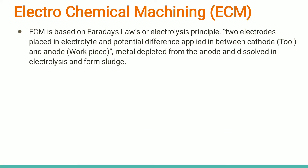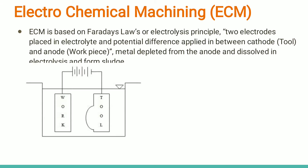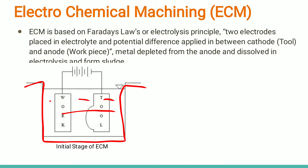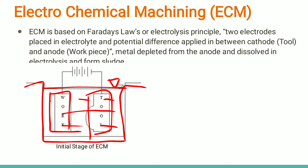ECM is a process based on electrolysis, or Faraday's law. For easy understanding, I am using this figure. This is a container filled with electrolyte, and we are using two electrodes connected with power cables to the power supply. One electrode is made the anode and another the cathode. The workpiece is made the anode and the tool is made the cathode.